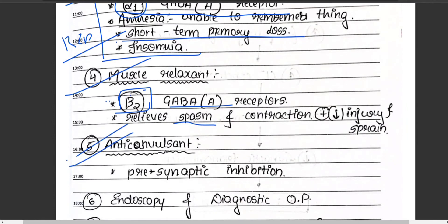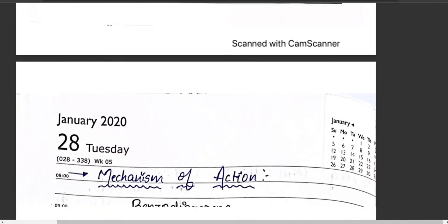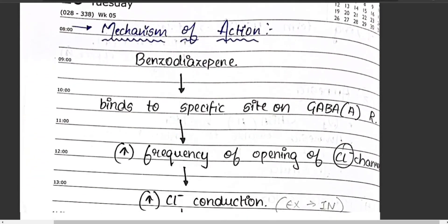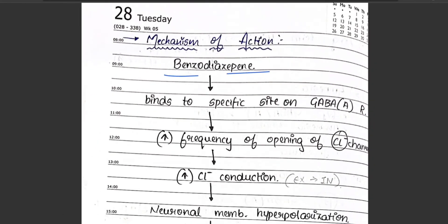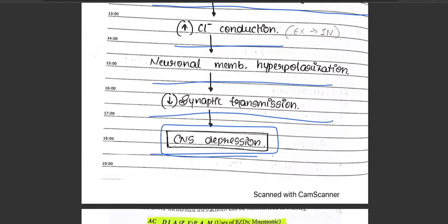Benzodiazepines are also used as anti-convulsants, mainly through presynaptic inhibition, in epilepsy, during endoscopy and diagnostic procedures, and to treat alcohol withdrawal syndrome. To recap the mechanism: benzodiazepines bind to specific GABA receptors, increase chloride channel opening, increase chloride conduction, cause neuronal membrane hyperpolarization, decrease synaptic transmission, and produce CNS depression.